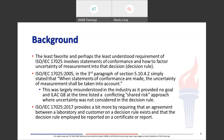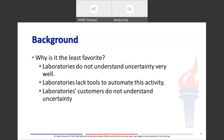17025:2017 provides a bit more by requiring that an agreement between the laboratory and customer on a decision rule exists, and that the decision rule employed be reported on the certificate or report. Why is it the least favorite? Laboratories don't understand uncertainty very well, they lack tools to automate the activity, and customers often don't understand uncertainty themselves.